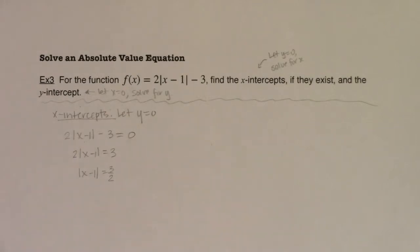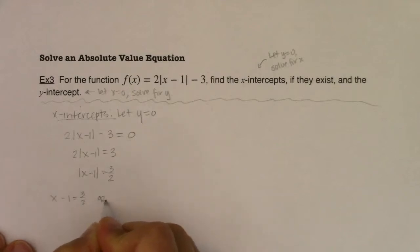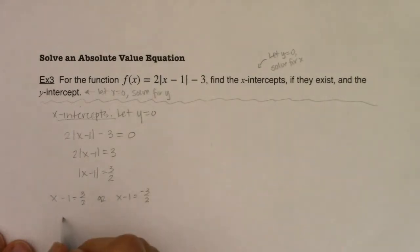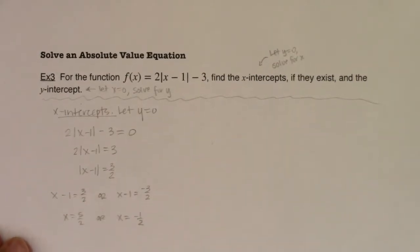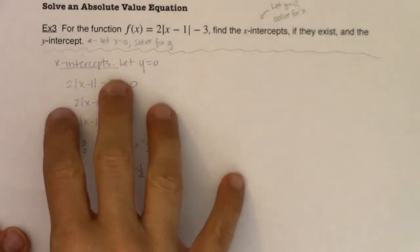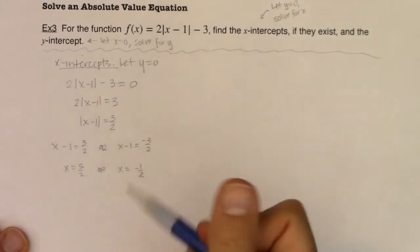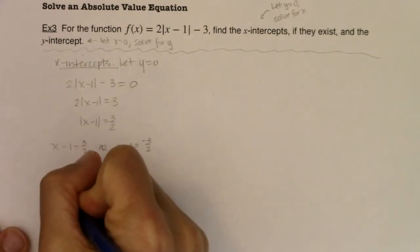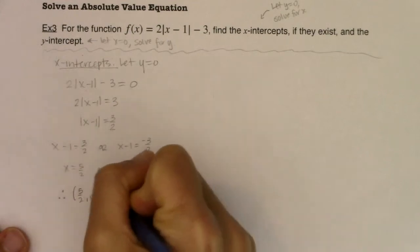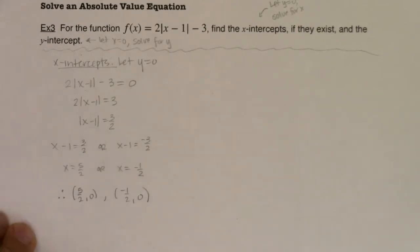The technique for solving this is case 1, which we talked about in sections 2.6 and 2.7. I'm going to let x − 1 = 3/2, or x − 1 = −3/2. So I get x = 5/2 or x = −1/2. Now, x-intercepts are points on a graph, so you owe me an ordered pair. My x-intercepts are (5/2, 0) and (−1/2, 0). So I have two x-intercepts, and we'll check them on the calculator in just a moment.